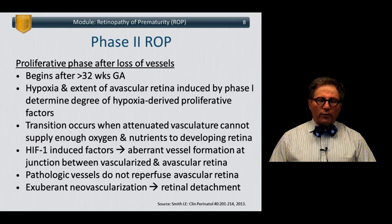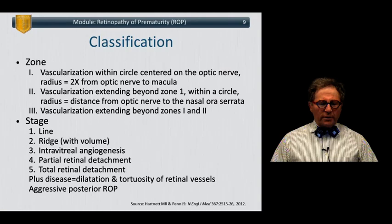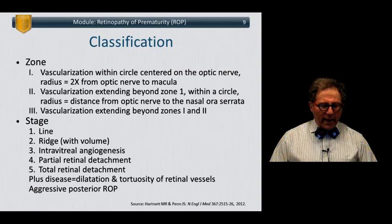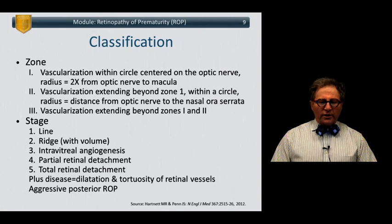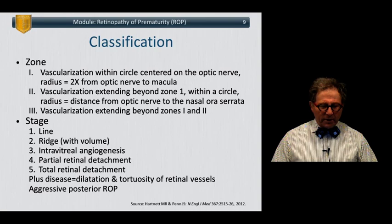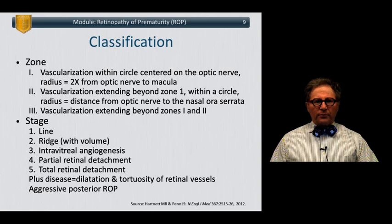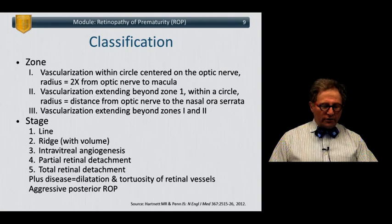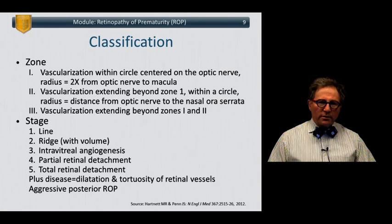These new blood vessels do not adhere to the normal pattern of being within the retina, and this leads to retinal detachment which, if severe enough and involving enough of the retina, leads to blindness. Retinopathy of prematurity is classified by zone — the region where ROP occurs — and by stage or severity. Zone 1 is vascularization within the circle around the optic nerve. Zone 2 extends a little beyond that, and zone 3 extends further outward. Stages 4 and 5 involve retinal detachment causing loss of vision.